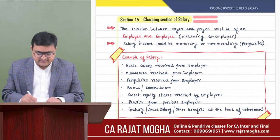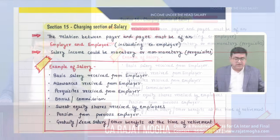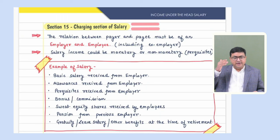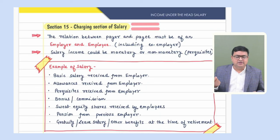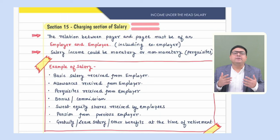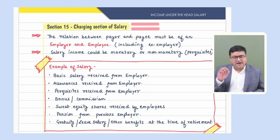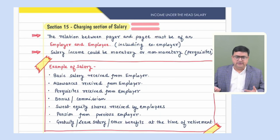First thing: the charging section is section 15. For any amount to be charged under salary, there must be a relationship between the payer and the receiver — the payer must be the employer and the receiver must be an employee. This relationship of master and servant must exist. If this relationship is missing, the amount will not be taxed under the head salary; it will be taxed under some other head.